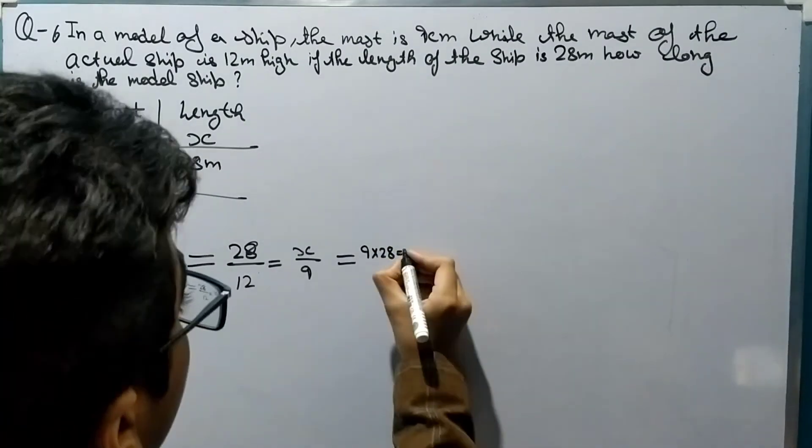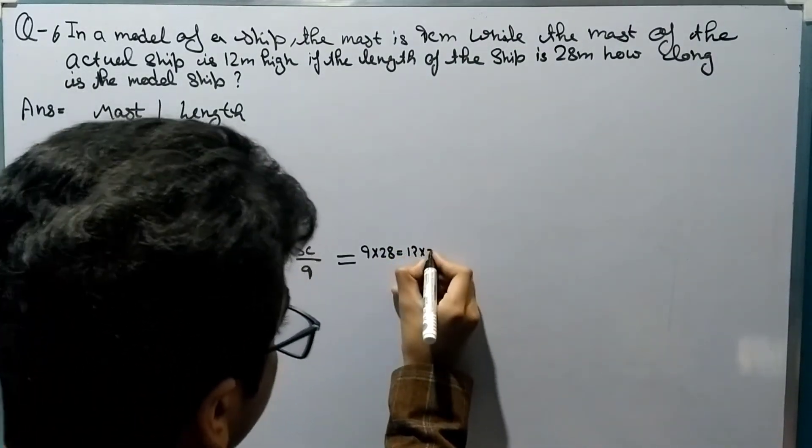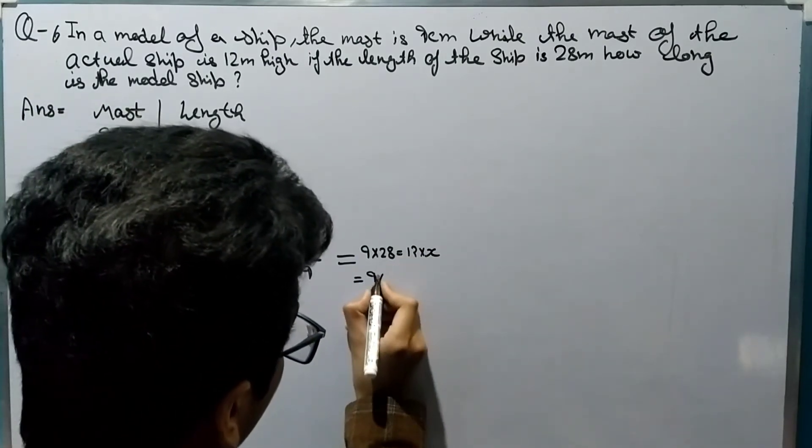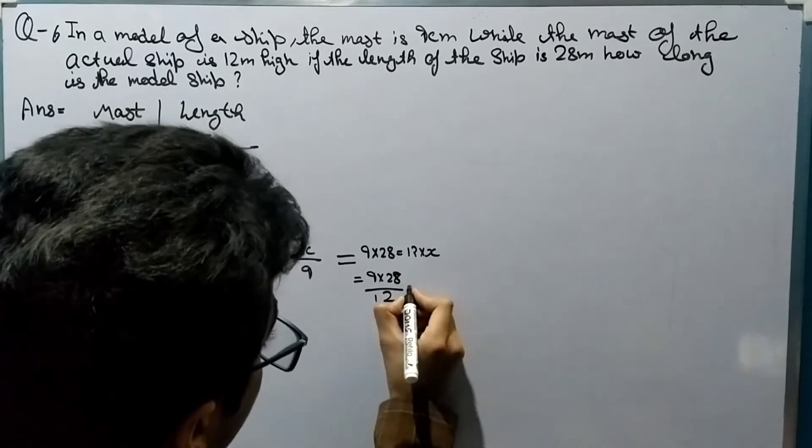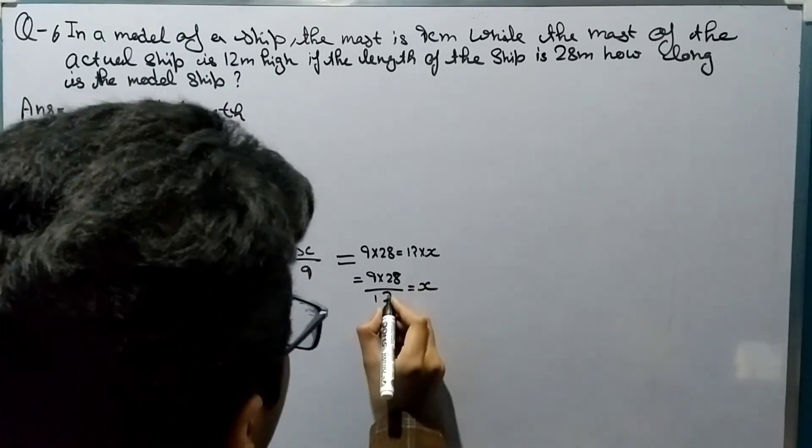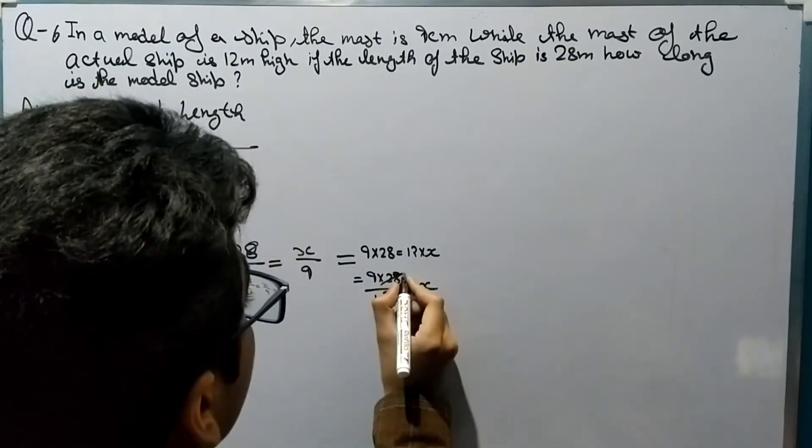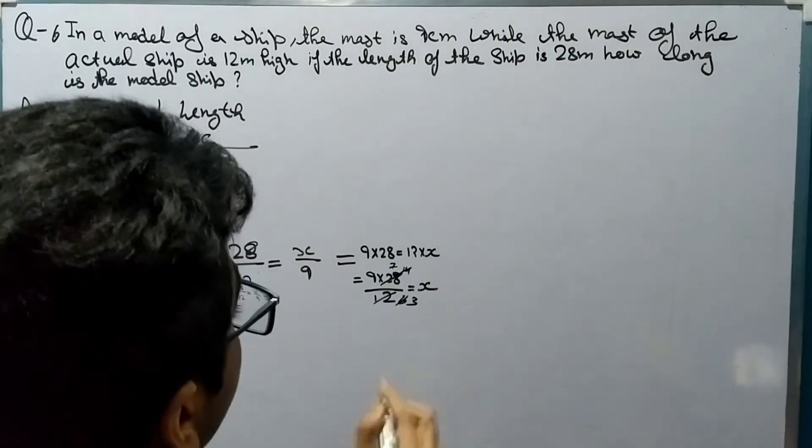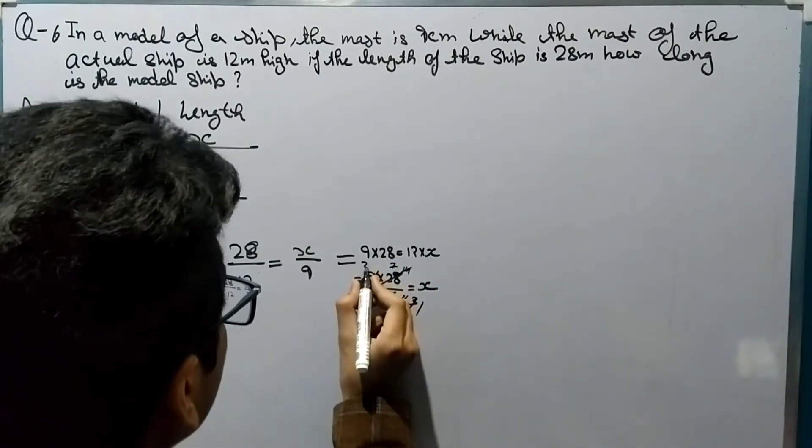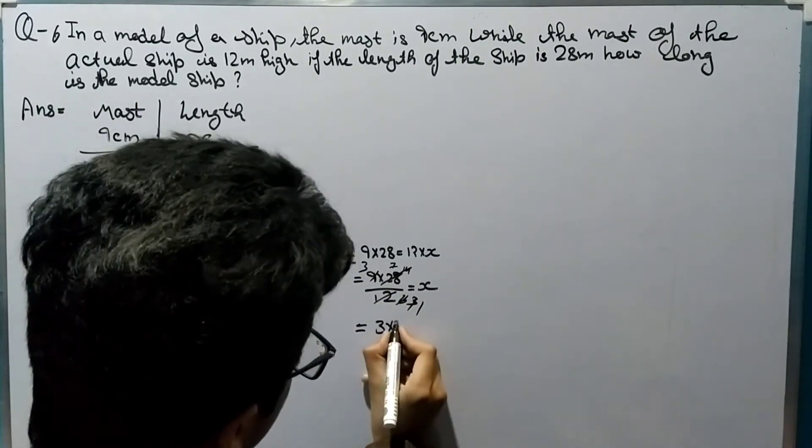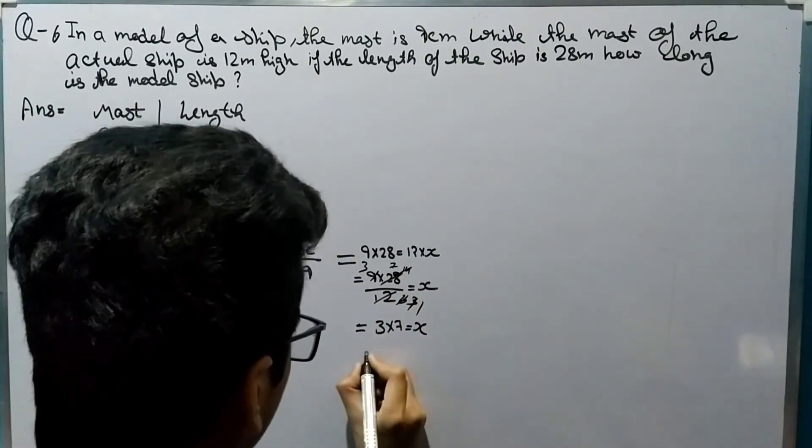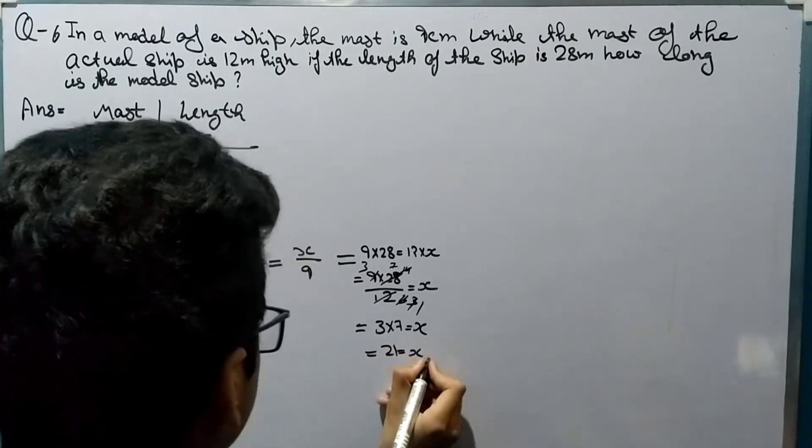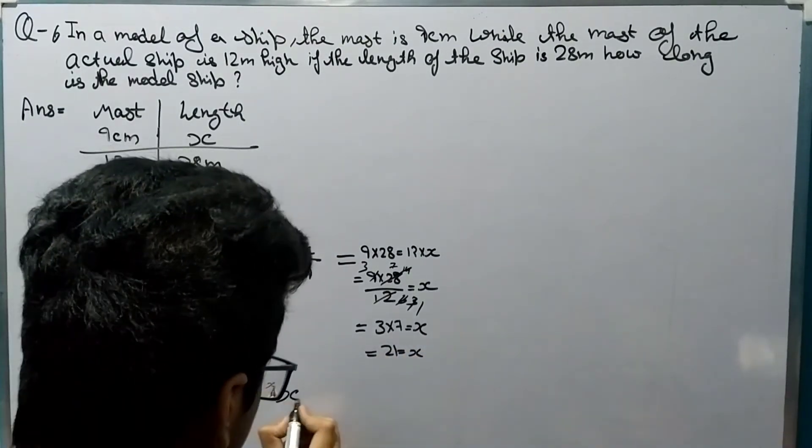So 9 by 28, 12 by 12 is equal to x. So 6, 40, 7, 3, 1, 3. So we got 3 by 7 is equal to x, so it will be 21 is equal to x. The value for x is 21.